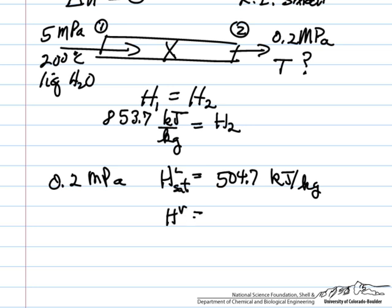Enthalpy of the vapor is much higher than that. So that delta H liquid to vapor is 2201.53 kilojoules per kilogram.